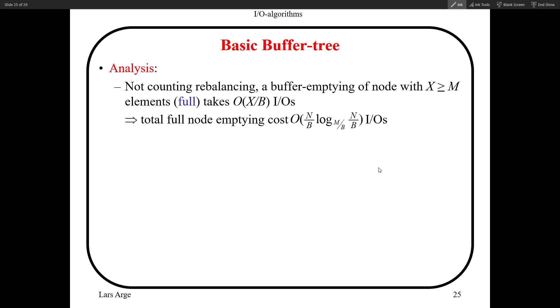Now let's look at the analysis. First, let's not count the rebalancing, just look at the buffer emptying operations. As we discussed, when you have a node with X elements in its buffer, emptying it takes X over B I/Os. That means the total node emptying is this much. We can get this by just counting what is the average number of I/Os that the element participates in. When you look at one node, an element participates in 1 over B I/Os, because we have X elements and in total I'm spending X over B I/Os. So on average, I have 1 over B I/Os per element.